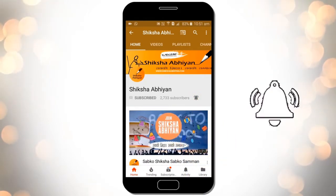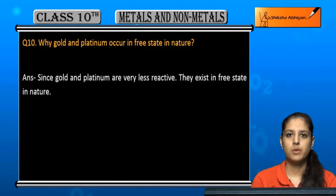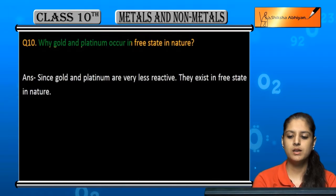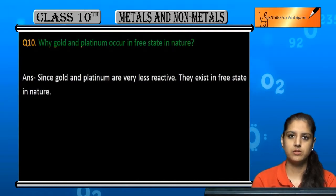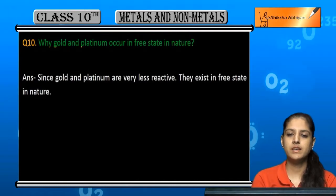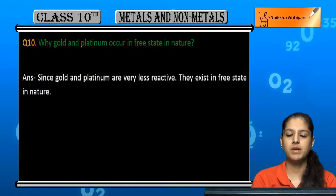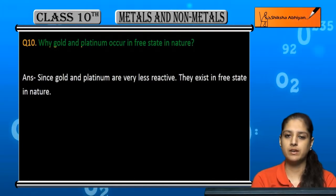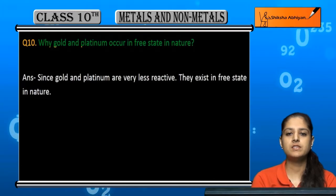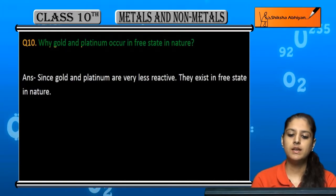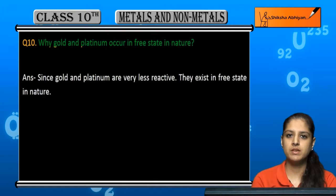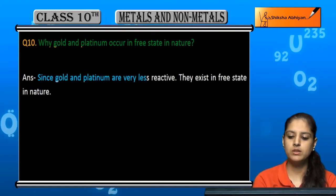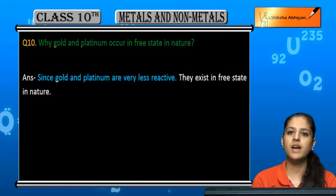Question number 10: Why do gold and platinum occur in free state in nature? We have seen many elements that exist in combined state — if a metal is more reactive, it can't exist alone in free state. But gold and platinum exist in free state because they are less reactive, so they can exist independently.